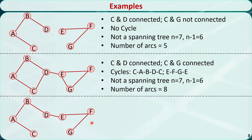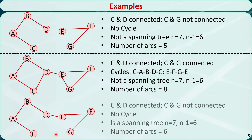In the third example, node C and node D are connected, and node C and node G are also connected. In fact, all the nodes are connected, and there is no cycle. This is a spanning tree because n equals 7, n-1 equals 6, and the number of arcs is 6, which is exactly equal to n-1.